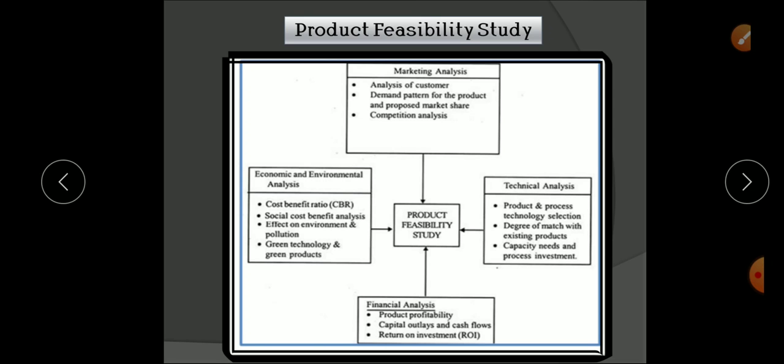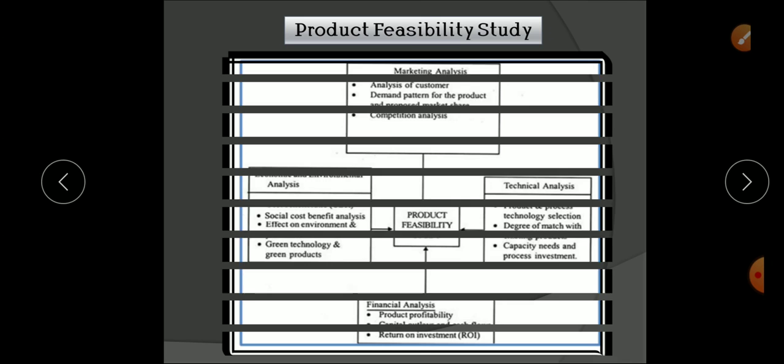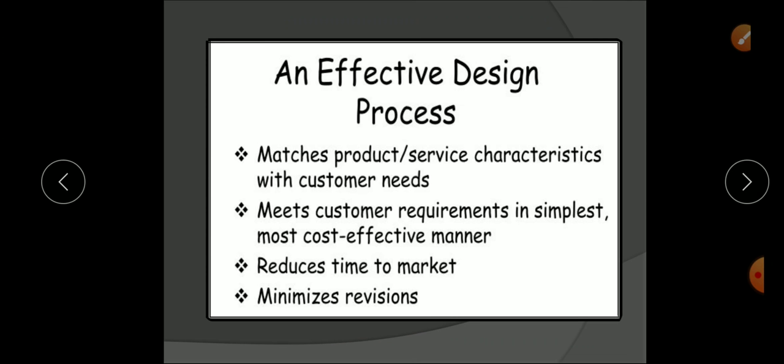The last parameter is economic and environmental analysis — we calculate the cost-benefit ratio, perform social cost-benefit analysis, and assess the effect on environment and pollution. Any new concept must meet industry norms related to environmental impact, pollution, green technology, and green products. This is checked during the economic and environmental analysis. The next topic is the effective design process.